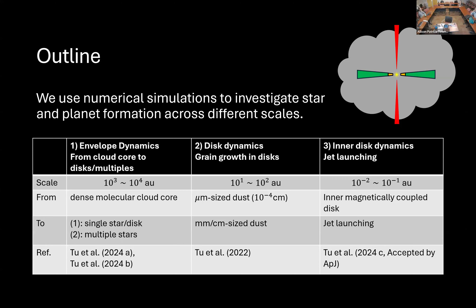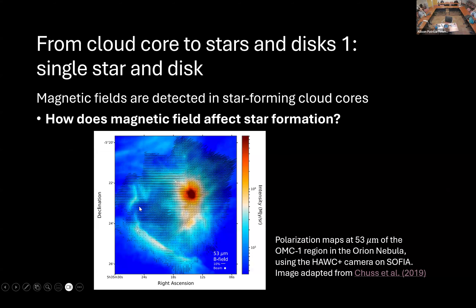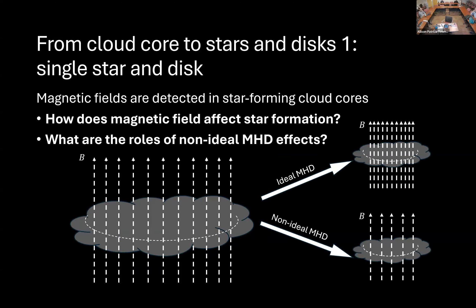On the larger scale we have the protostellar envelope scale — the formation of stars and disks. At the disk scale, we have grain growth, which is the first step towards planet formation. And for the inner disk, I will talk about how jets are launched and how we model them. Starting from the envelope scale: magnetic fields are detected in star-forming cloud cores. This is an observation of magnetic fields in a giant molecular cloud. How does this magnetic field affect star formation? And how does non-ideal MHD affect star formation?